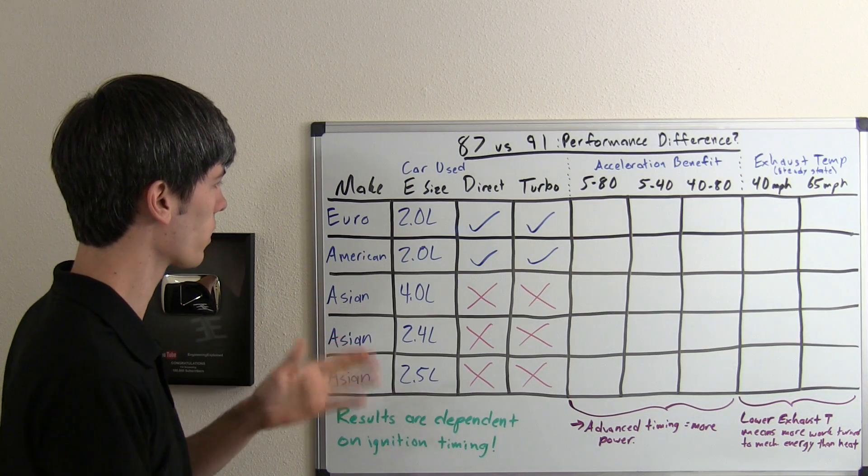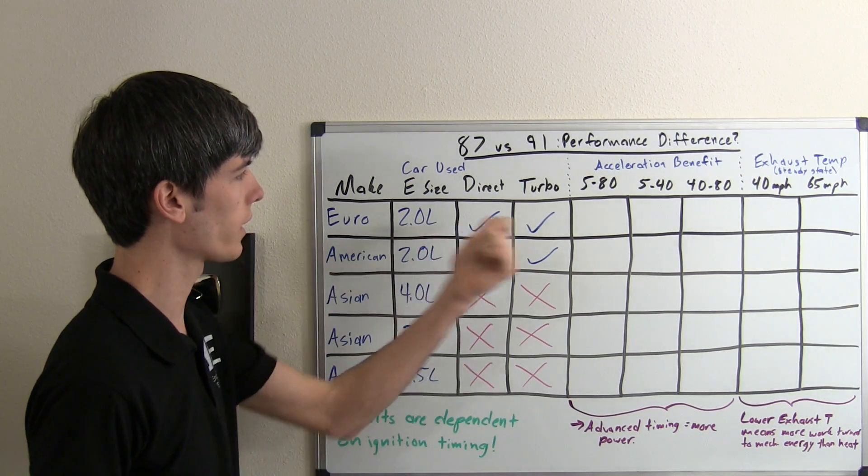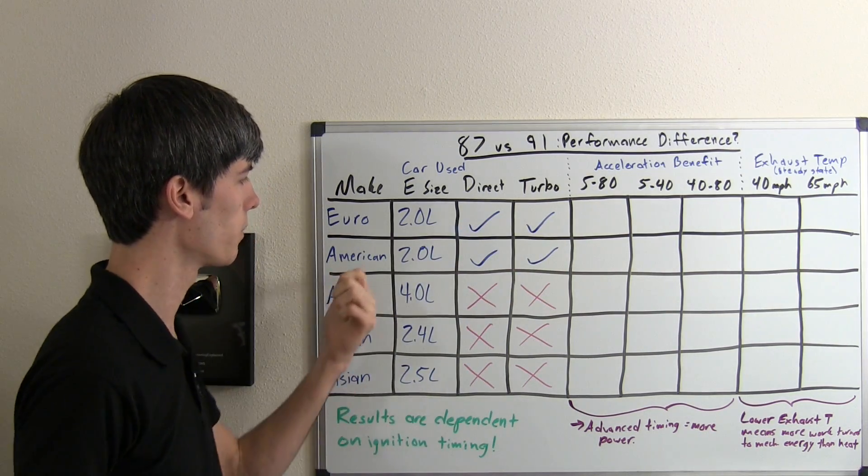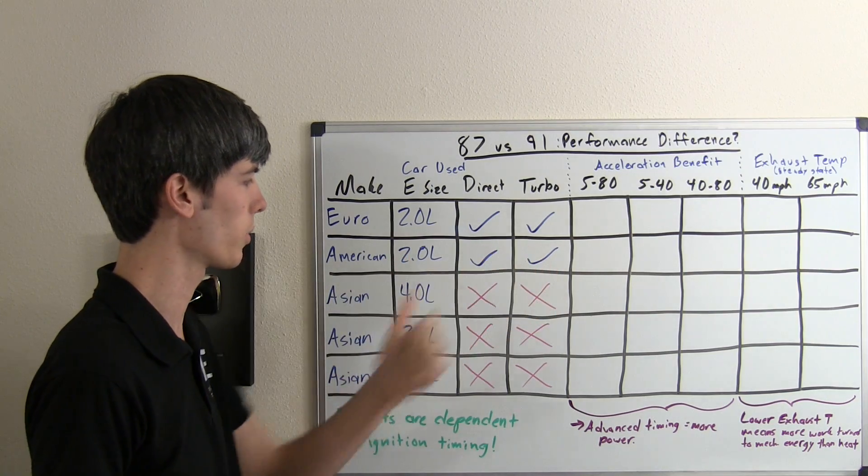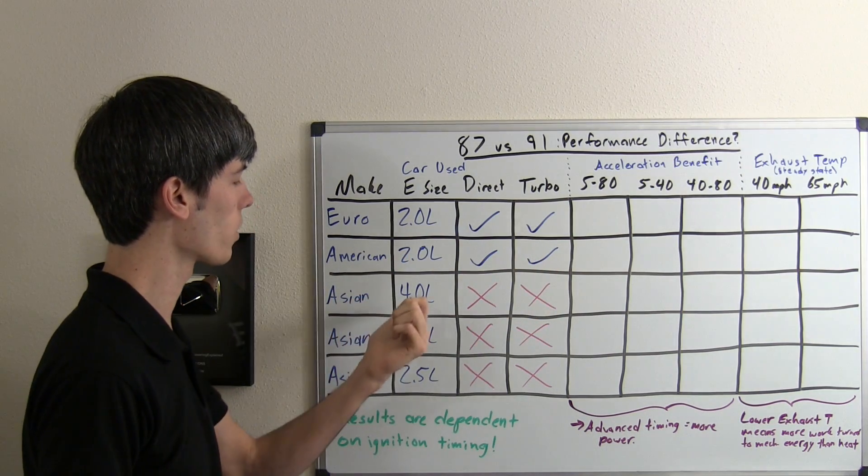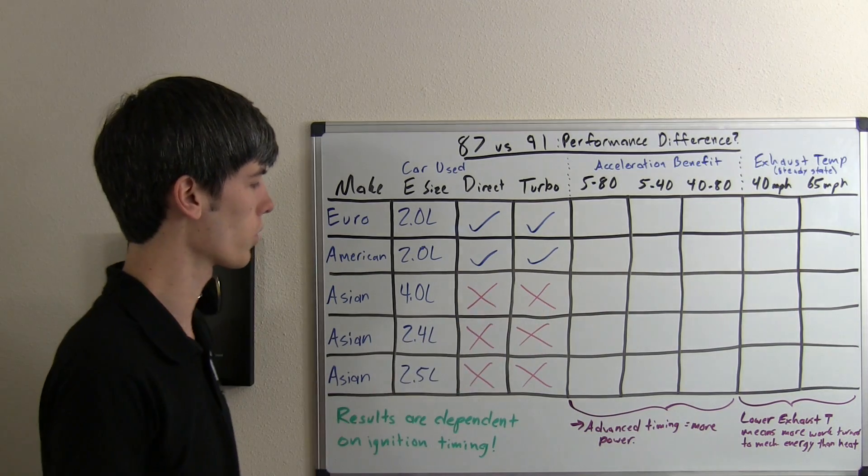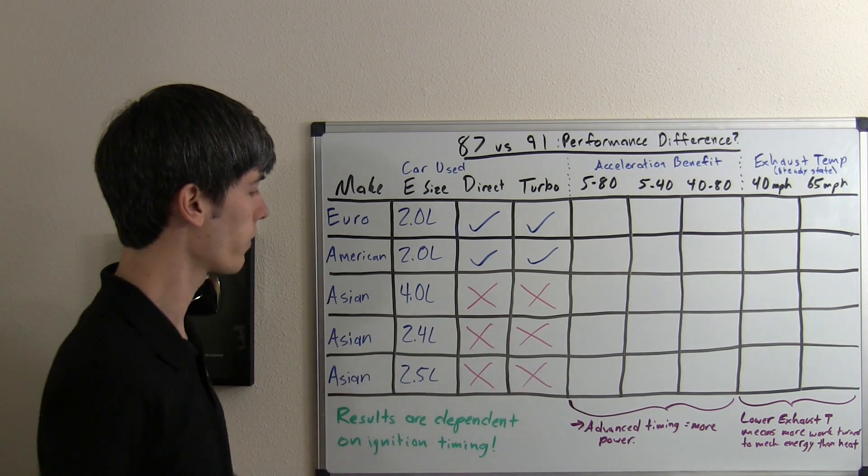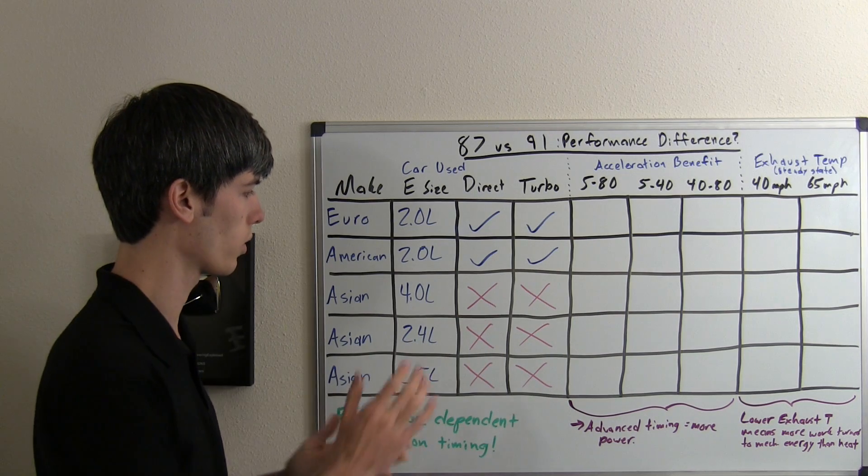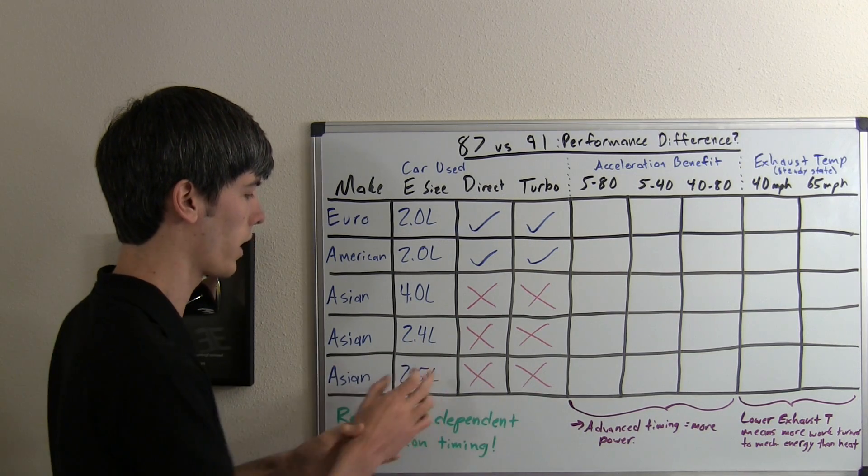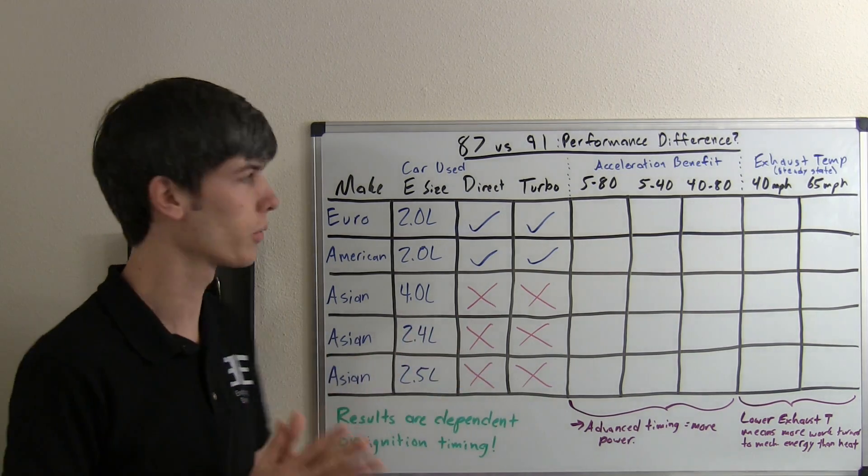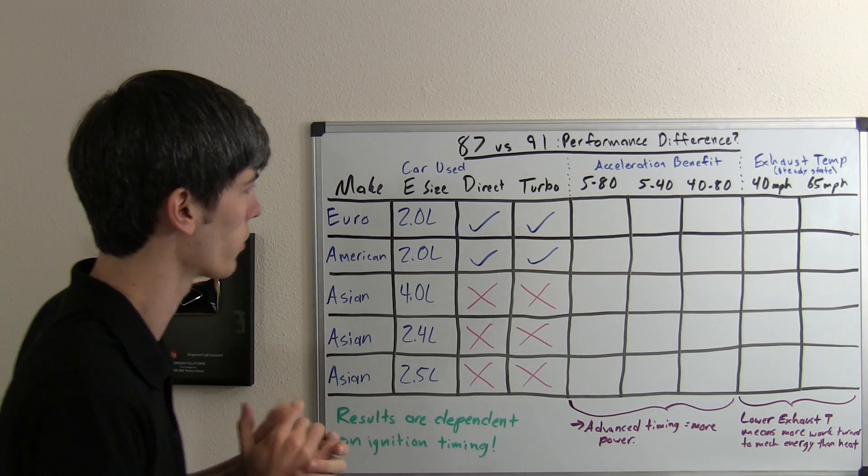Of these five vehicles, the European was a 2-liter direct injection and turbocharged, the American 2-liter direct injection turbocharged, one of the Asian cars 4-liter without direct injection or turbocharging. None of the Asian vehicles were direct injection or turbocharged, including a 2.4 liter and a 2.5 liter. This study was published in 2013.